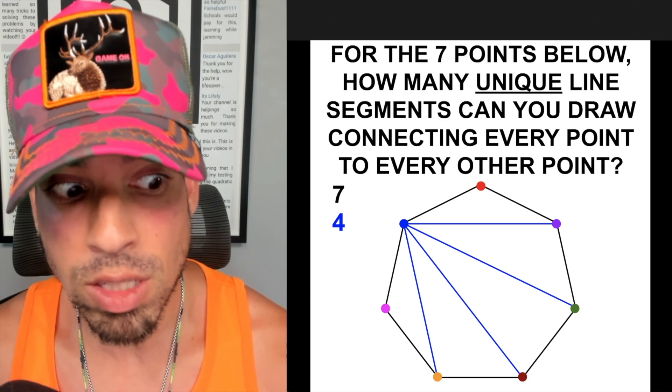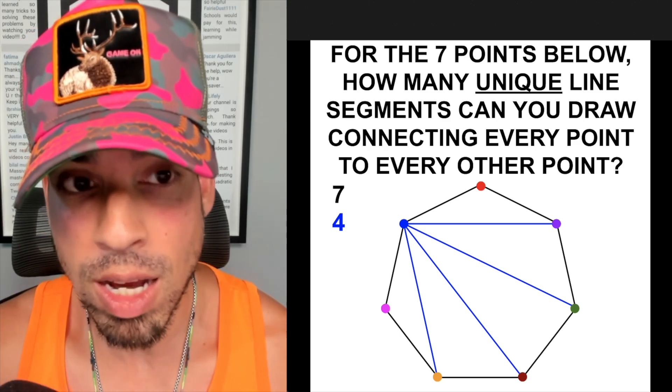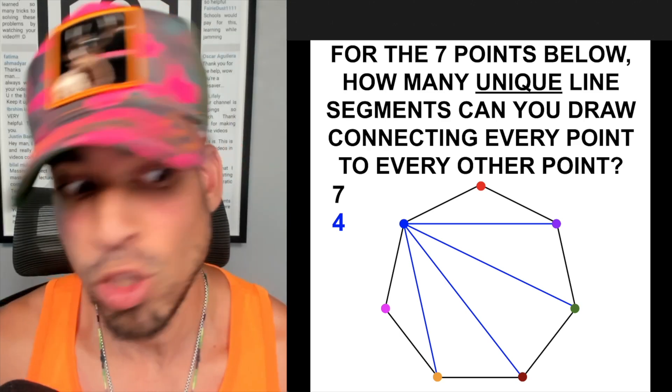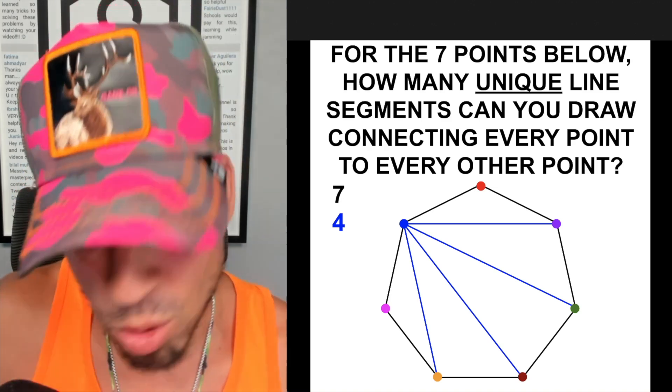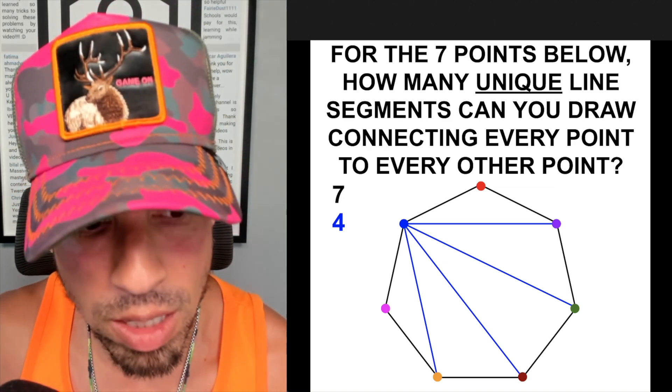Now you might stop here and say all right, we got seven on the outside, this one connects with four lines, we just take four times seven which is 28 plus the original seven and we're good to go. But you're going to see it's not that simple.